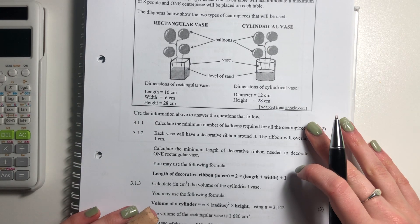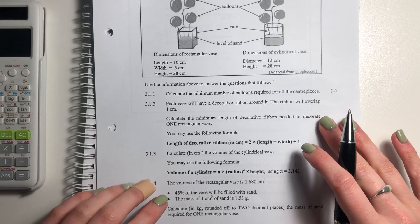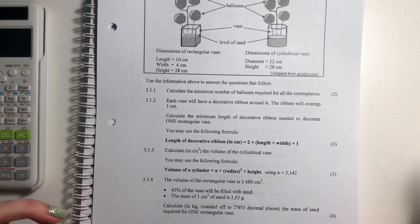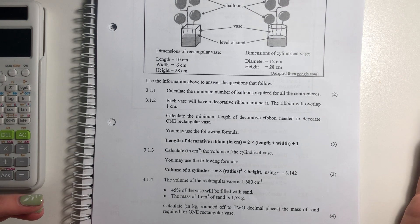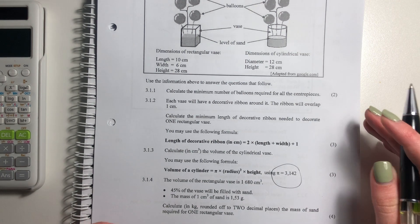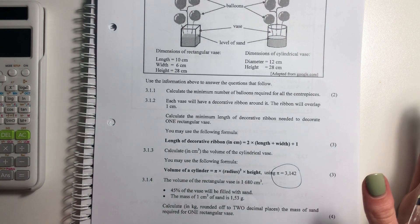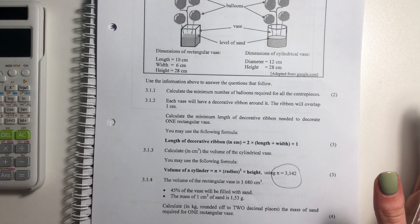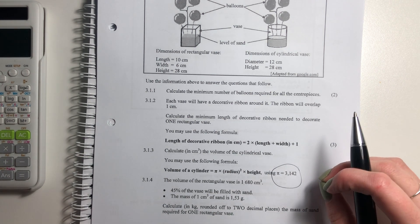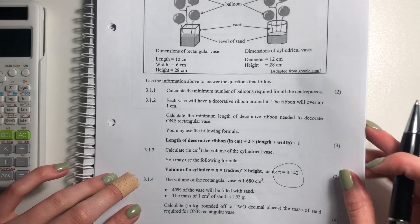Let's now go on to the more trickier questions of 3.1.3. It says calculate, in centimeters cubed, the volume of the cylindrical vase. You may use the following formula, pi times radius squared times height. And they tell you what pi equals. Now, this is very important. Often what students do is they just go and plug pi into their calculator. No, guys. It says what pi is, so therefore use that value.